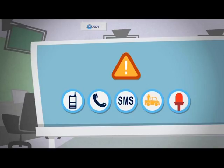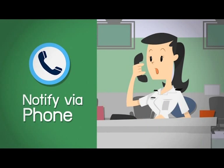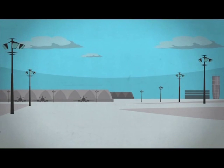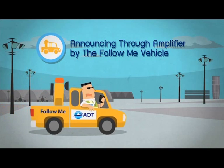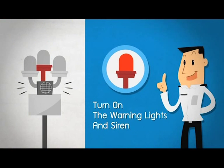We will inform you through five channels as follows: notify directly via trunk radio to airport staff; notify directly via phone to the office of operator; send SMS to the station managers; announce through amplifier by follow-me vehicle; and in the event of adverse weather condition level 3, we will turn on the flashing red light and siren.